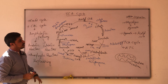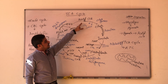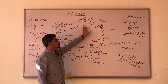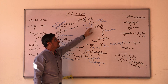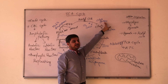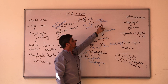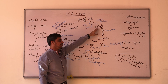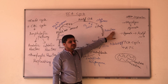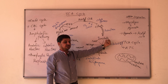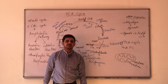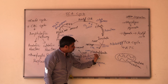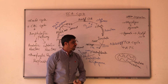Let me repeat once again. Acetyl-CoA attaches to oxaloacetic acid, there is removal of CO2 and CoA-SH, and the enzyme involved is citrate synthase, giving the product citrate. Citrate, with the help of aconitase enzyme, is converted into isocitrate. And this isocitrate, with the help of isocitrate dehydrogenase enzyme, is converted into alpha-ketoglutarate.